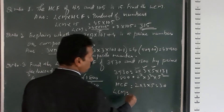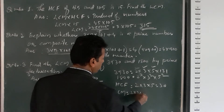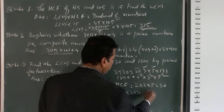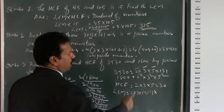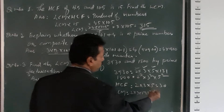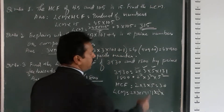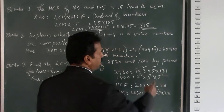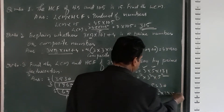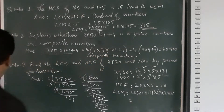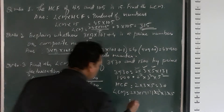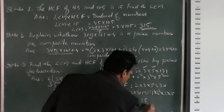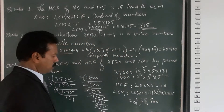For LCM, take all common factors and non-common factors: 2³ × 3² × 5² × 131. Multiplying all of these gives LCM = 23,490. So HCF = 30 and LCM = 23,490.